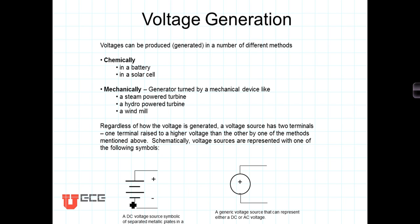The battery symbol is typically meant to imply the parallel plates of a battery. The plus-and-minus symbol is a more generic voltage source — it could be DC like a battery, or AC like an alternating current generated by a generator in a turbine.